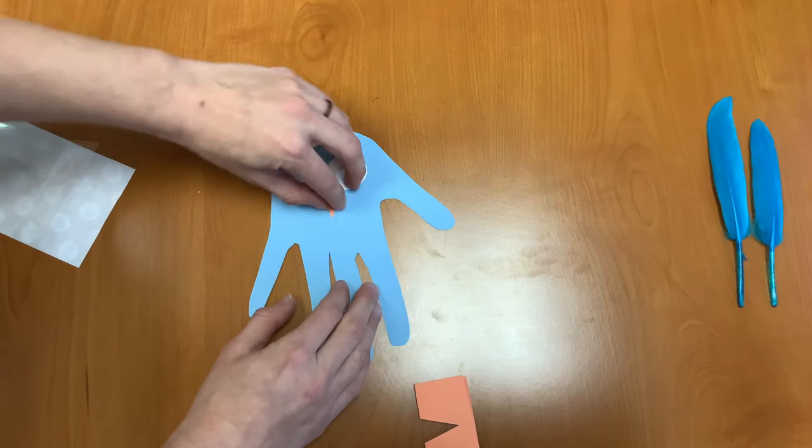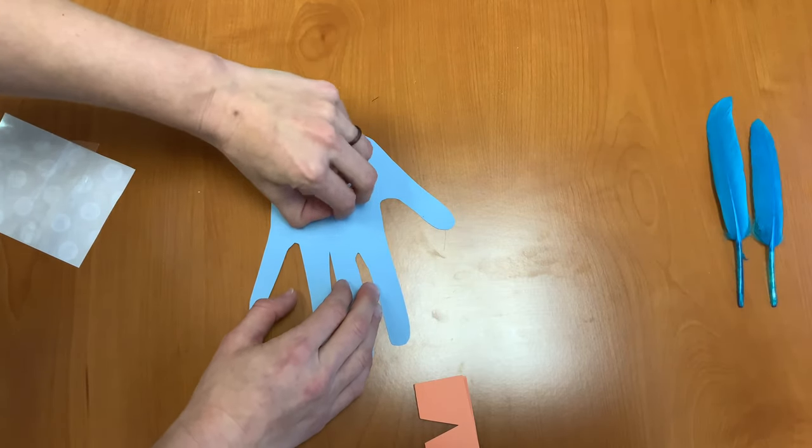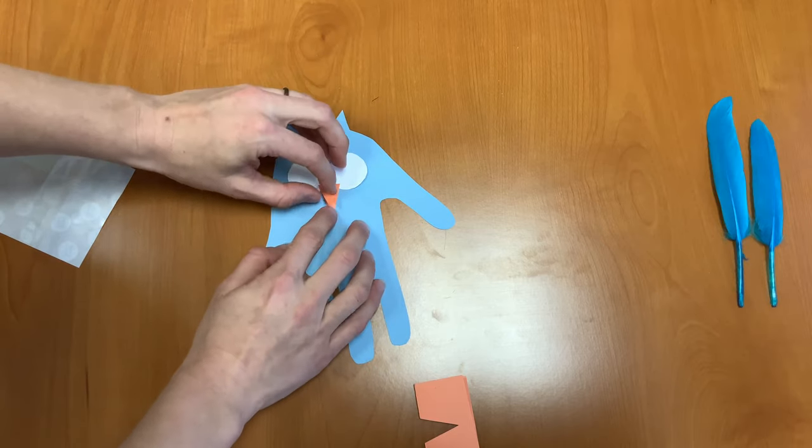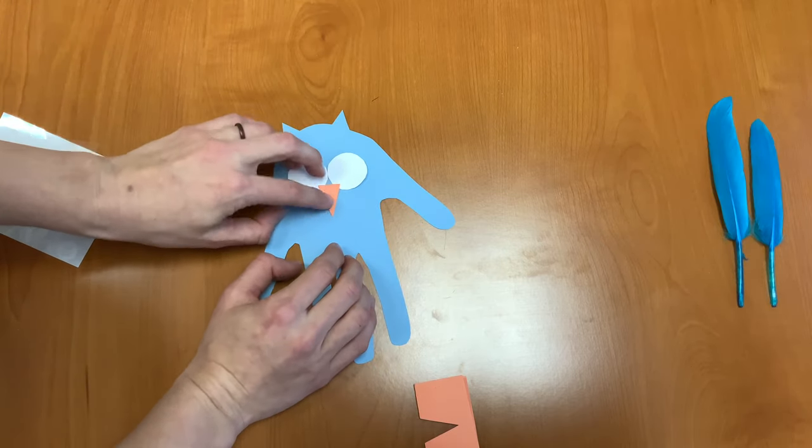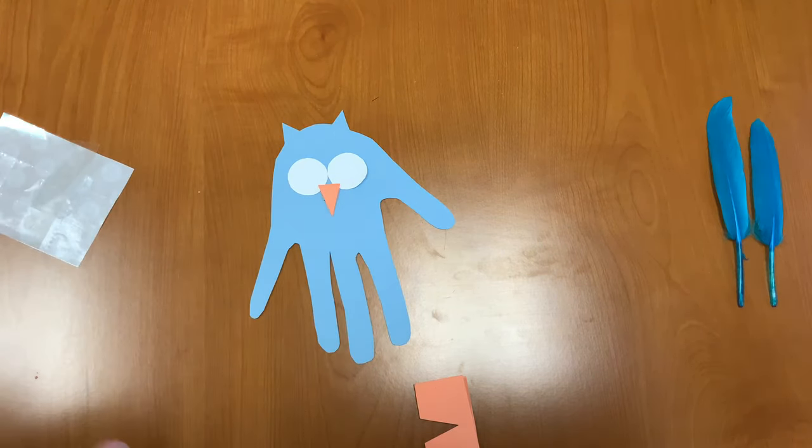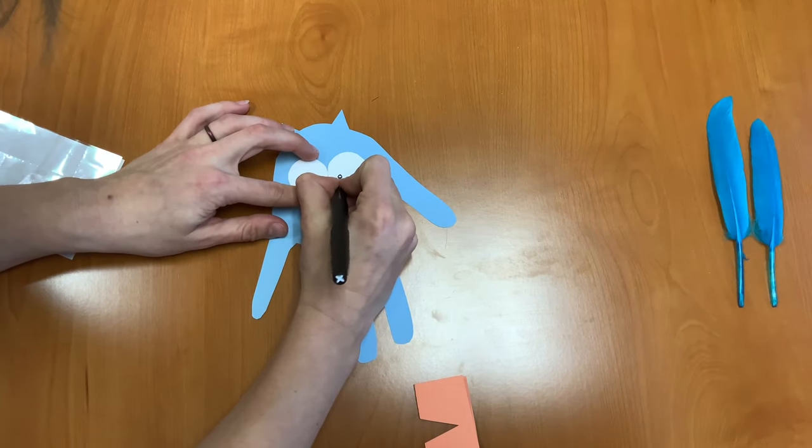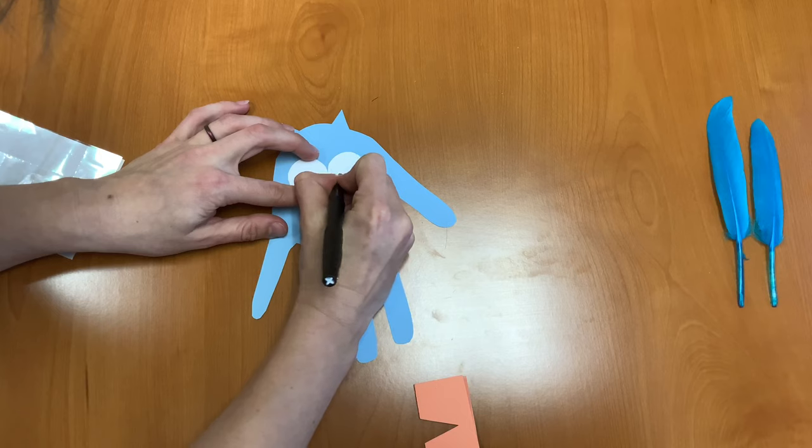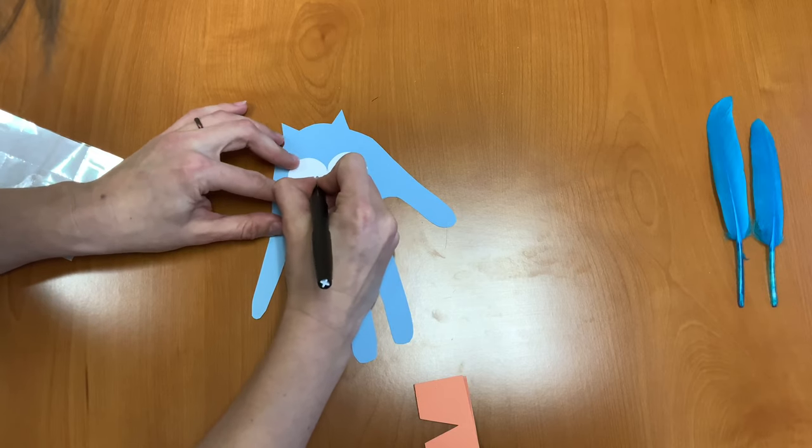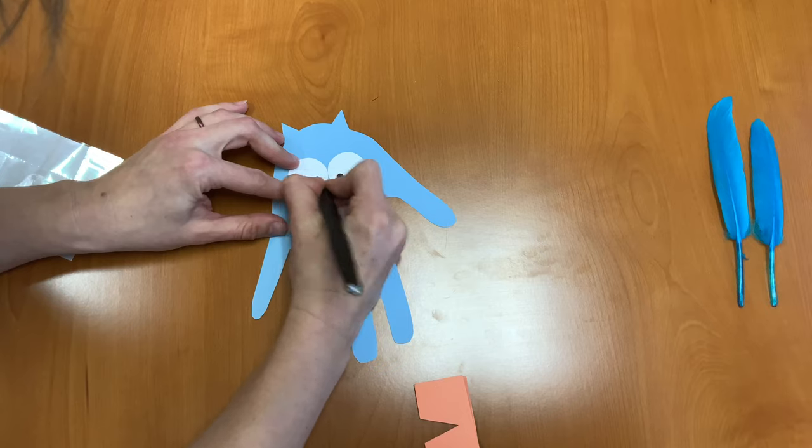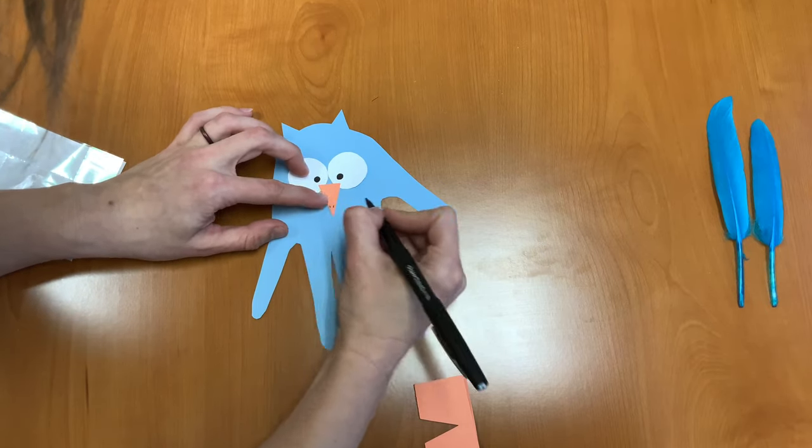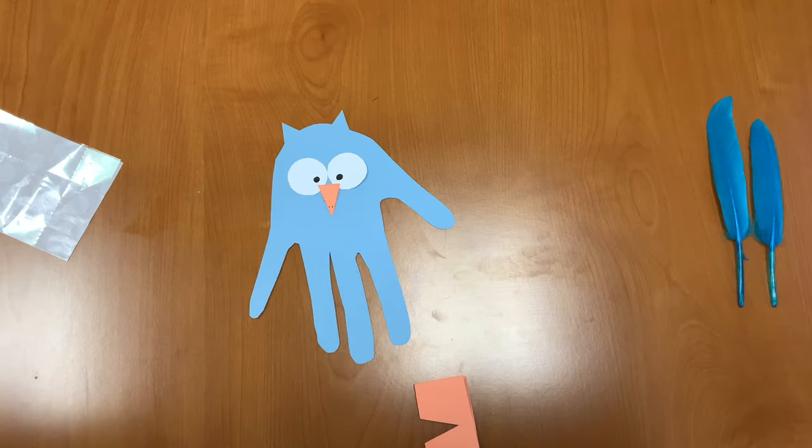Goes right between the eyes. There we go. And now your beak can open and close. Now we need to draw on little eyeballs. Maybe some little nose holes. And our owl is almost done.